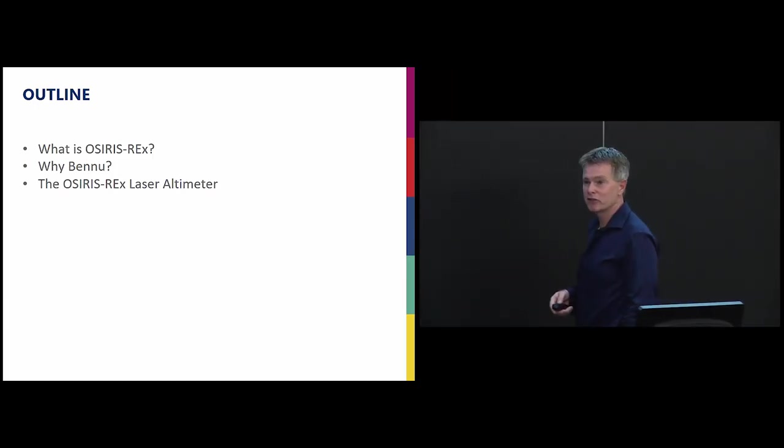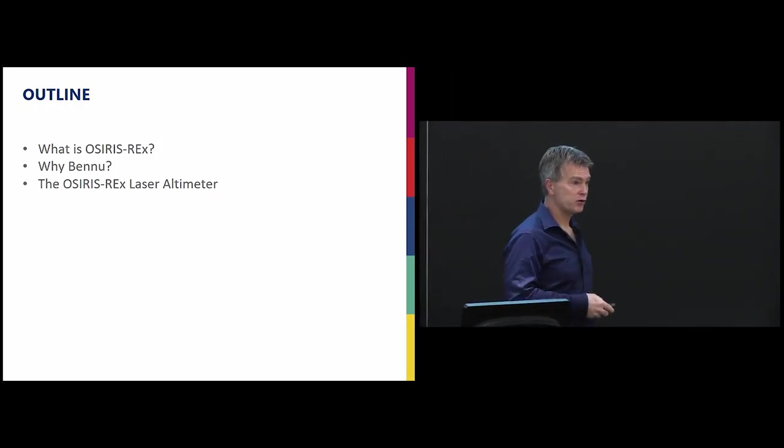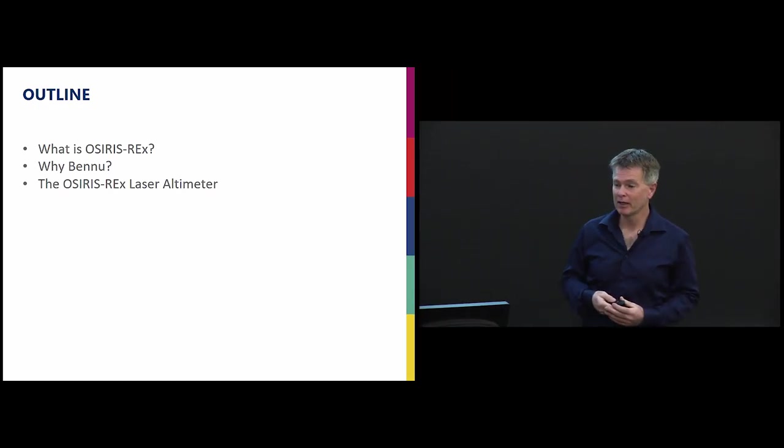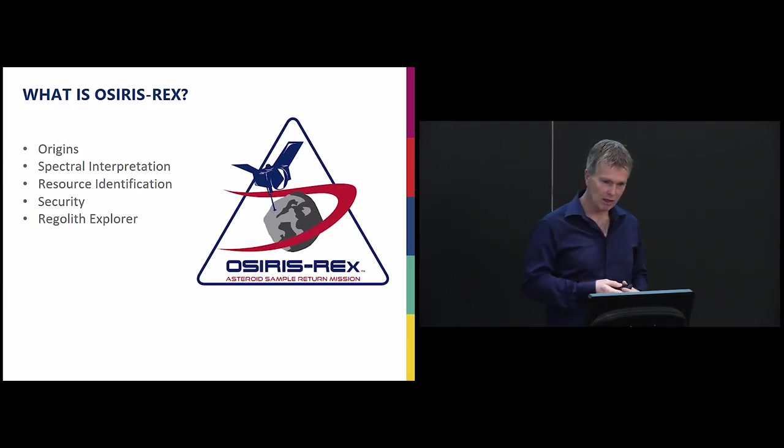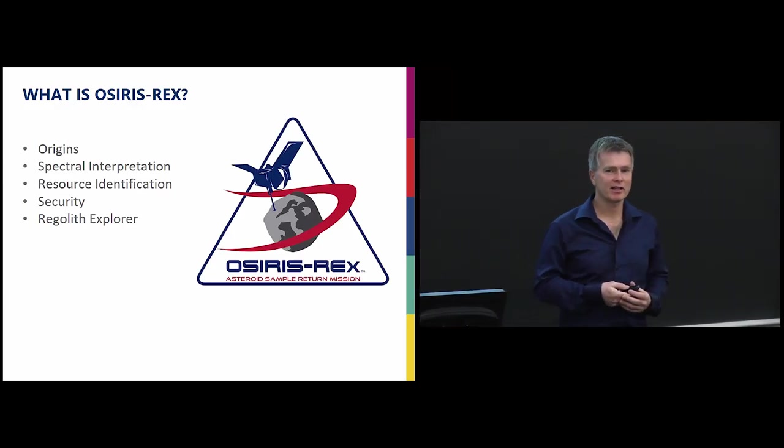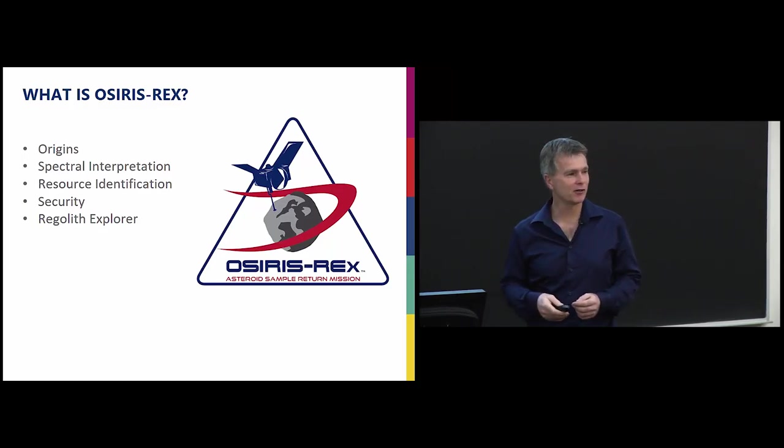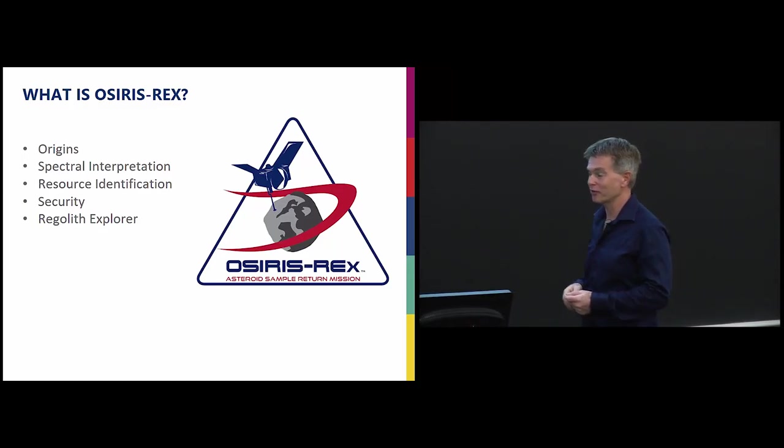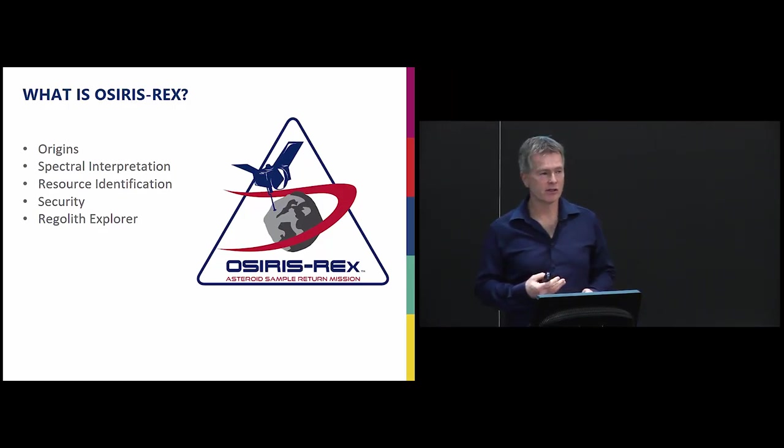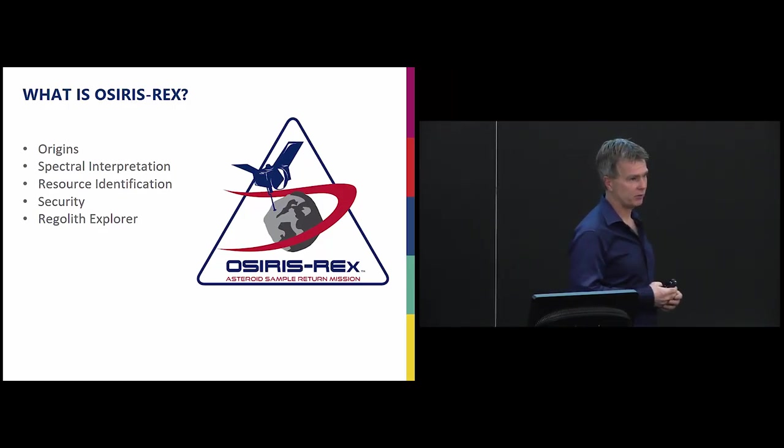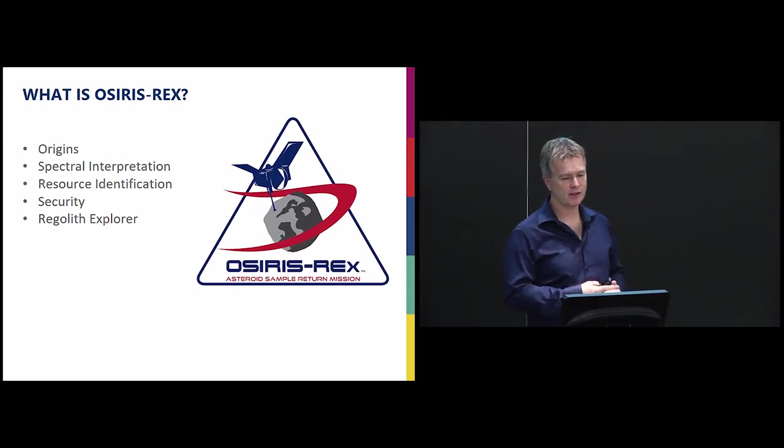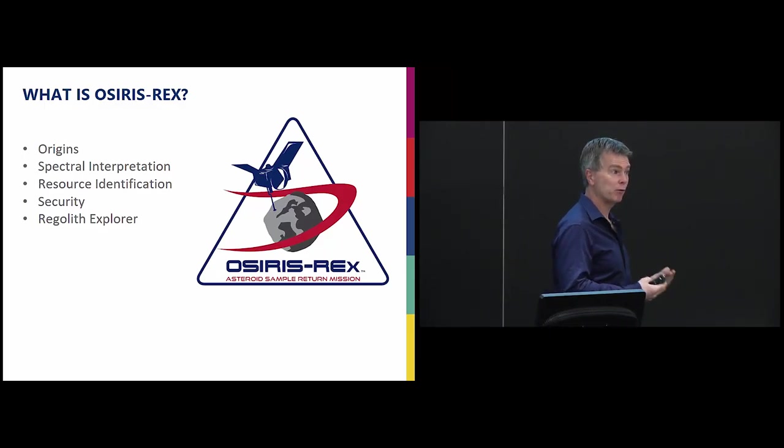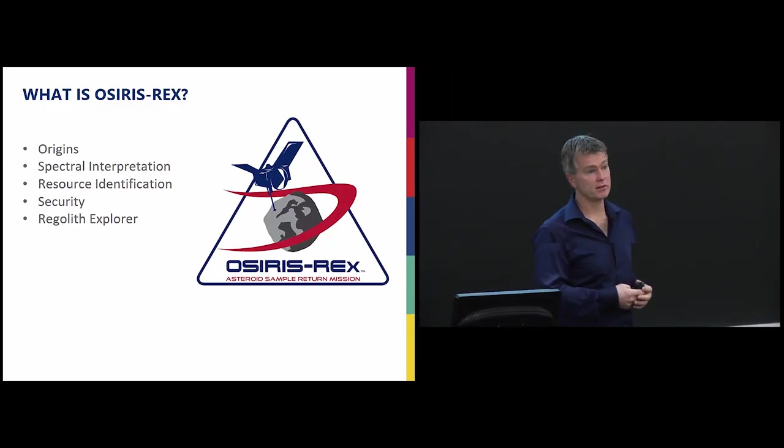Here's the outline of the talk. I'm going to tell you about the mission. The mission is called OSIRIS-REx, why we chose the particular asteroid, which has the odd name Bennu, that the mission is targeting, and then a little bit about the instrument itself. So all space missions have to have a name that has an acronym. The objectives of the mission are contained within the name itself: origins, spectral interpretation, resource identification, security, regolith explorer.